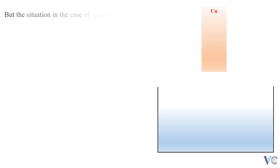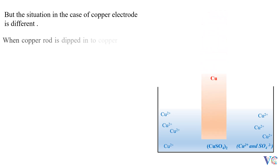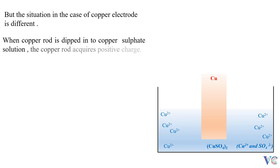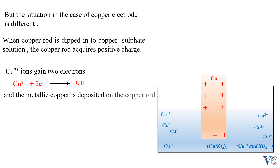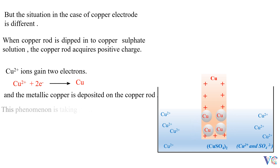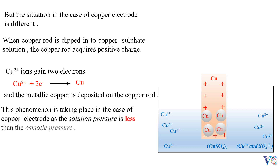The situation in the case of the copper electrode is different. When a copper rod is dipped into copper sulfate solution, the copper rod acquires positive charge. Cu²⁺ ions gain 2 electrons, and metallic copper is deposited on the copper rod. This phenomenon takes place in the case of the copper electrode, as the solution pressure is less than the osmotic pressure. The potential developed in such case is called reduction potential.